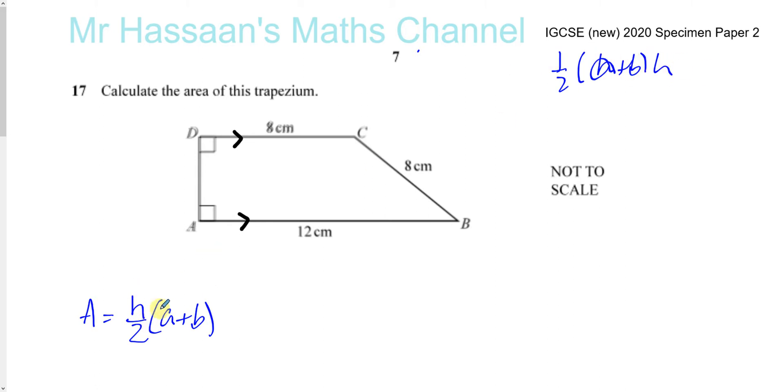That's the h, divided by 2, times the sum of the parallel sides. So that's your a and that's your b, or vice versa.